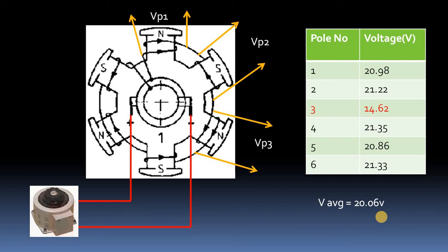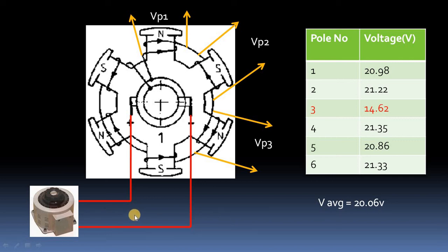From these readings, we can see that pole number three has a voltage which is less than the average voltage, so pole number three has shorted turns. The process is simple: apply voltage using the variac, measure voltage across all poles, and whichever pole has a voltage less than the average voltage has shorted turns.